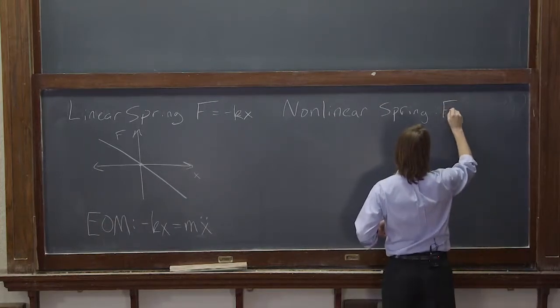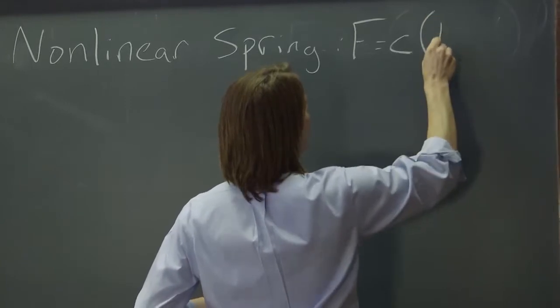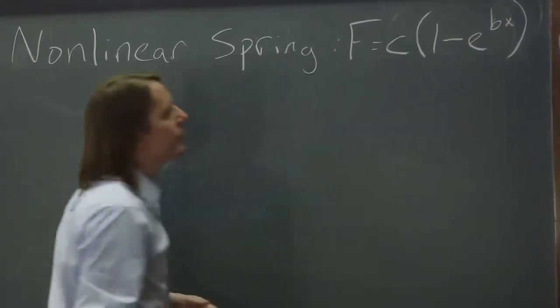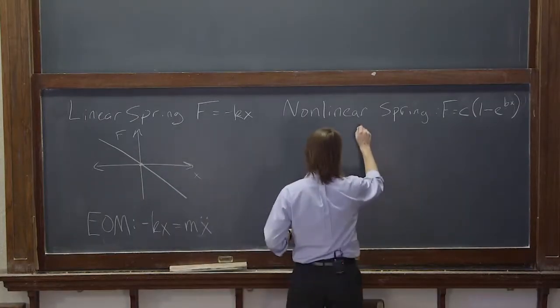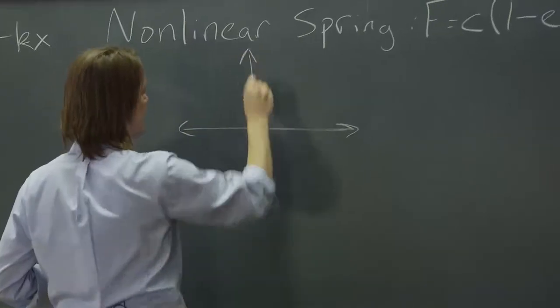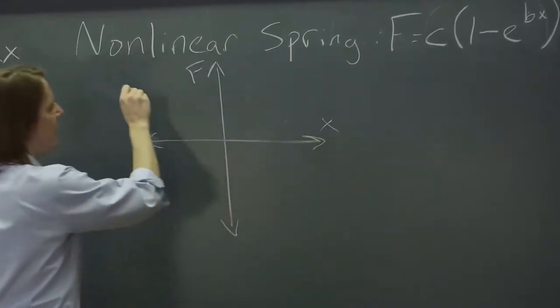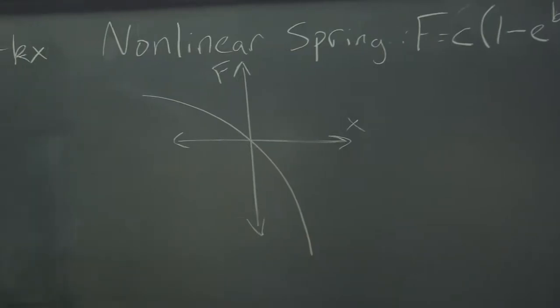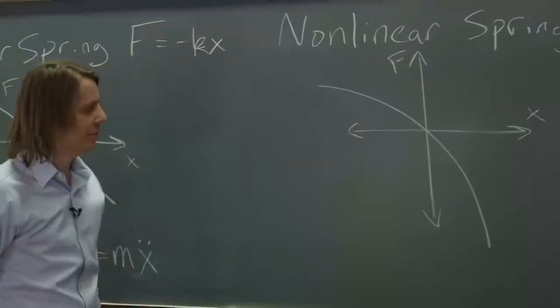And I'll just make one up. Let's say f equals constant times 1 minus e to the bx. That could be a spring because if I plot that function, it looks a little bit like this. If this is f and this is x, it kind of comes and curves down like that. So clearly, the plot is nonlinear.